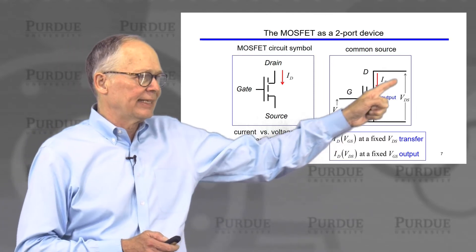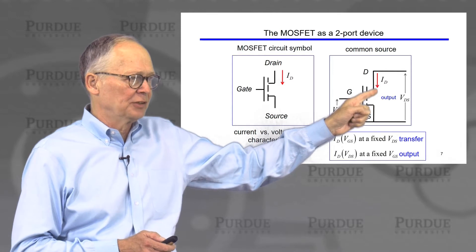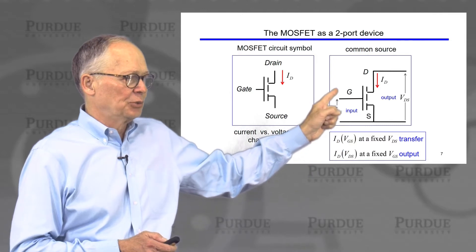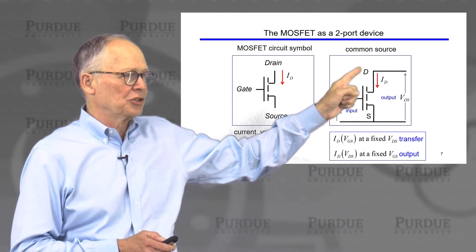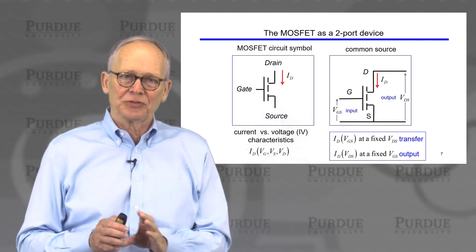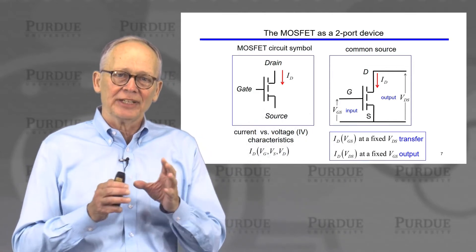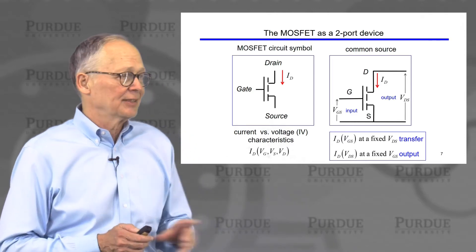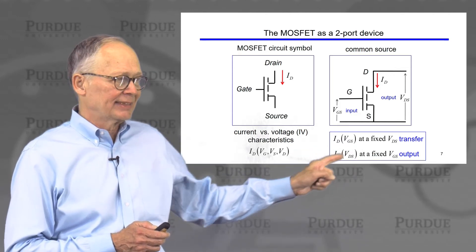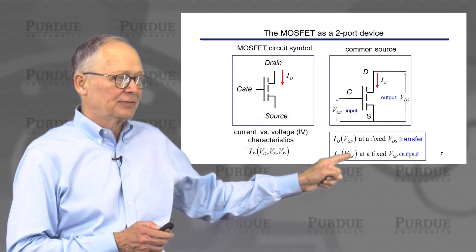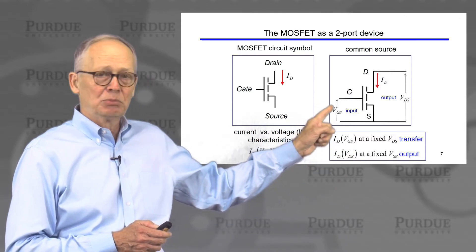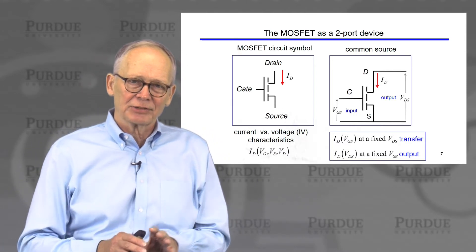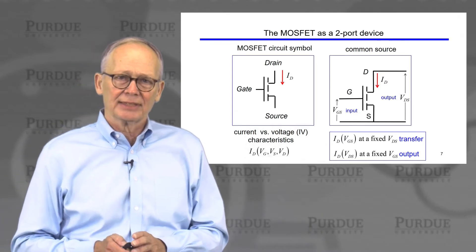The transfer characteristic is the output current — the drain current — as a function of the input voltage, which is the voltage between the gate and the source, at a fixed voltage between the drain and the source. The output characteristic is the output current as a function of the output voltage when we fix the input voltage at one particular value. These are terms we'll use over and over in the course.